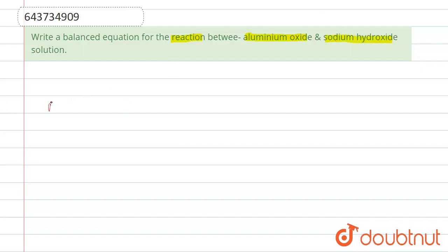The reaction is like we have aluminum oxide, which is Al2O3, plus sodium hydroxide, so let us write NaOH, and this gives NaAlO2 plus H2O.